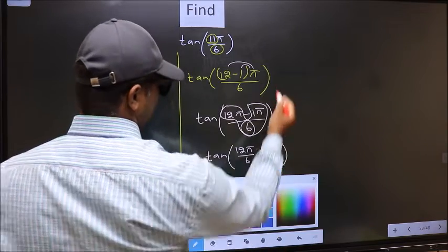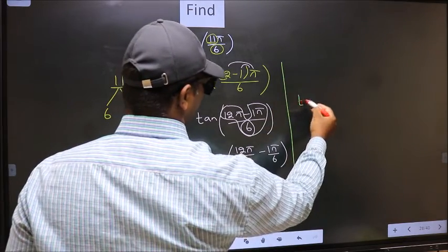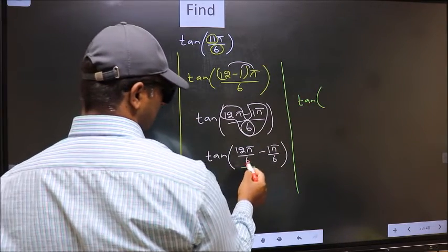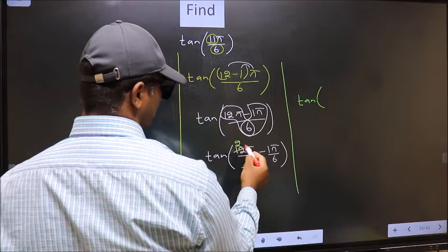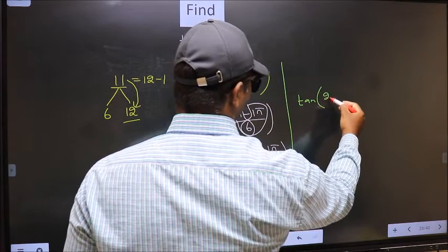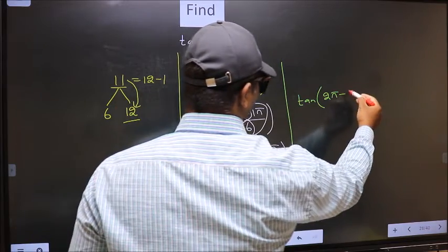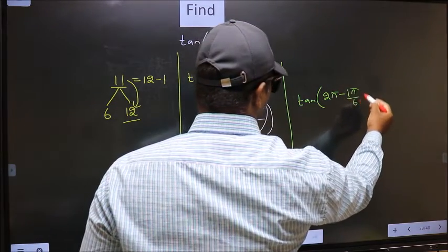Next, tan. Now, over here, we should cancel 6 into 12. So we get 2π minus π/6.